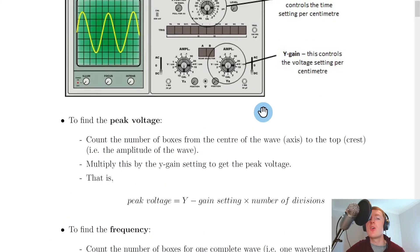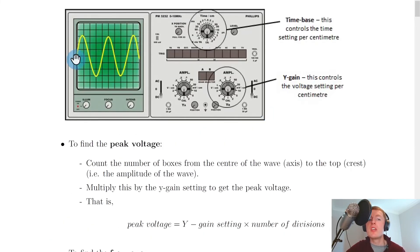Looking at my oscilloscope screen here, one complete wave going from here all the way up, all the way down, and back to the start is four divisions along. So I have four divisions, and if my time-base setting was two milliseconds per division, then I would have 2 milliseconds per division times 4 divisions, which gives 8 milliseconds for my period.